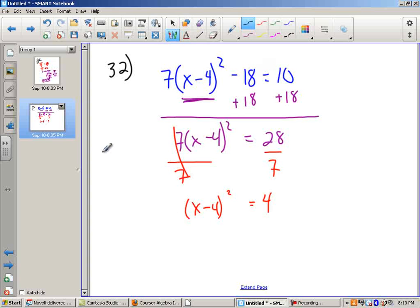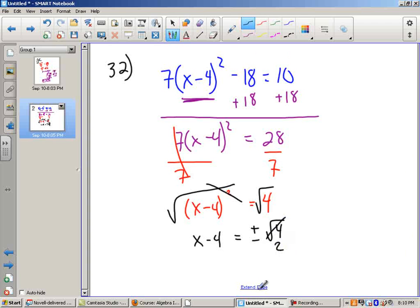If I follow the same format I did on the last problem, once I get the term squared by itself, rather than actually trying to square this, which would require FOIL, I'm just going to jump straight to the square root. That allows me to cancel the square and the square root. And I'm left with X minus 4 equals plus or minus the square root of 4. But I know the square root of 4 is 2. So I'm going to cross that out and put a 2 there. So X minus 4 equals plus or minus 2.